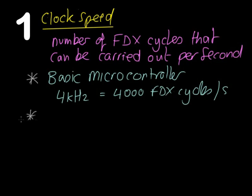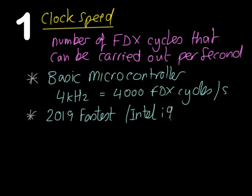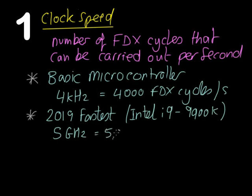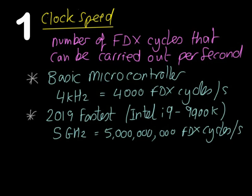Until you consider the latest Intel i9 processor — the 2019 fastest — which is the Intel i9-9900K, coming in at a phenomenal 5GHz, which is 5 billion FDX cycles per second. That's fast. It also costs quite a lot of money.